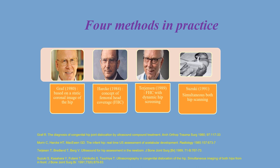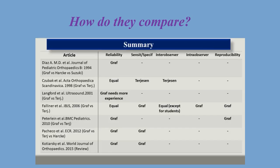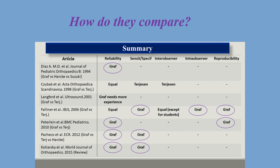Currently there are four methods in practice. The Graf method was introduced in 1980 by Professor Graf and is probably the most popular one. The Harker method was introduced in 1984 and is based on the concept of femoral head coverage. Theriansen introduced his method in 1989, relying on femoral head circumference within dynamic hip screening. Suzuki introduced his method in 1991, based on scanning both hips at the same time. A few studies have compared these four methods in terms of reliability, sensitivity, specificity, inter-observer and intra-observer errors, and reproducibility, and the Graf method came out on top.